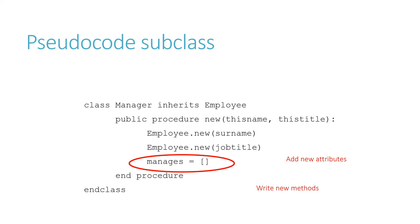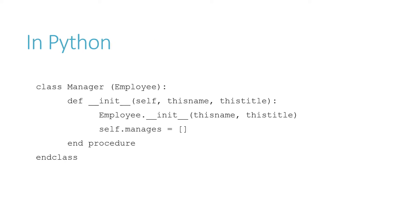You can write new methods as well if you want to. We can do it in Python as well — this is the same constructor done in Python. So manager brackets employee: that's what the brackets at the start of a class definition are for. Manager inherits all the features of employee. They have the employee's init values of name and title, but they also have a list of people that they manage. Very similar to pseudocode.